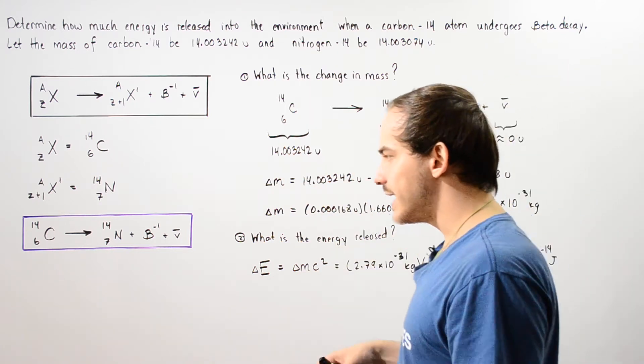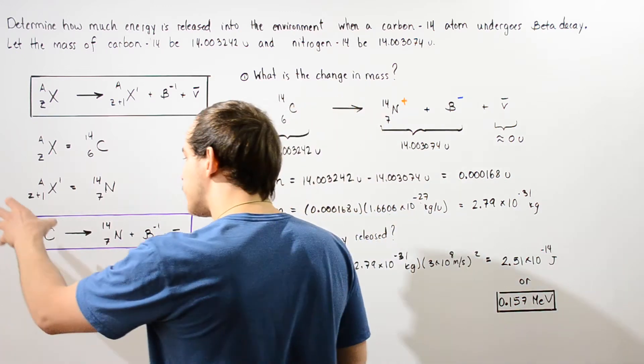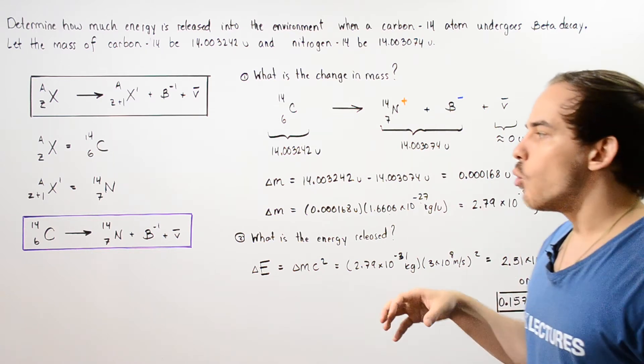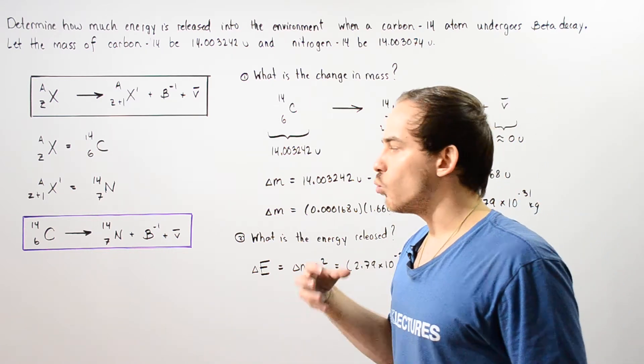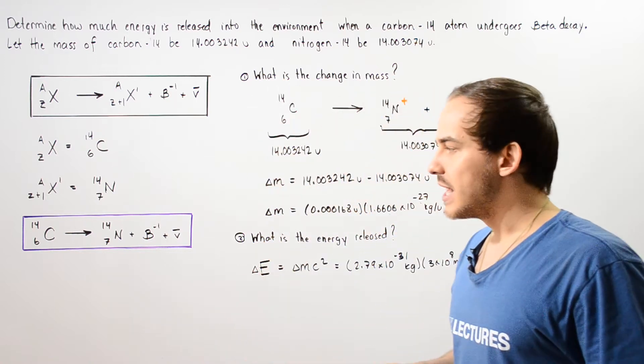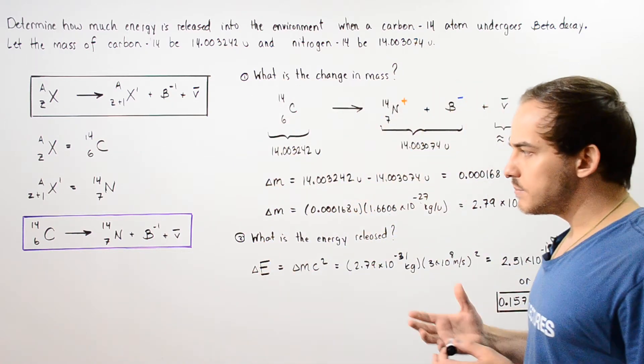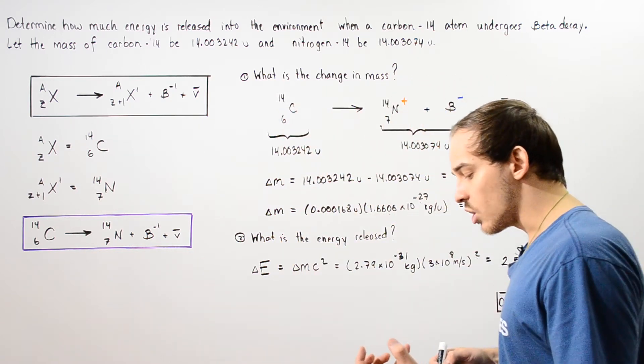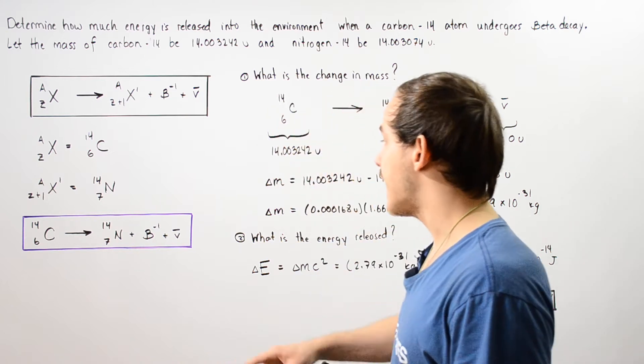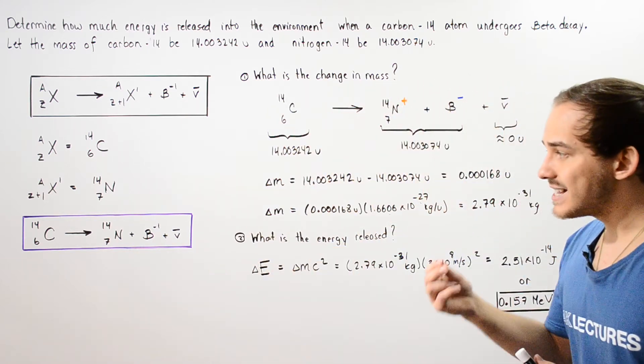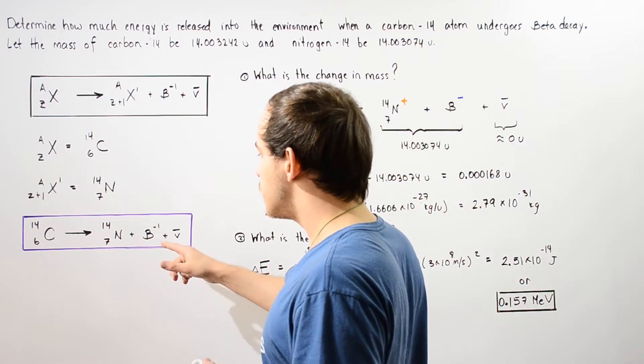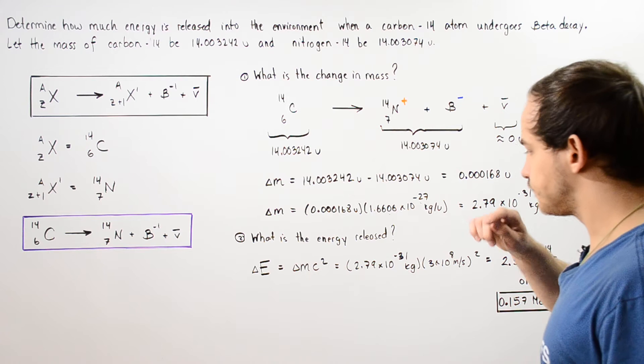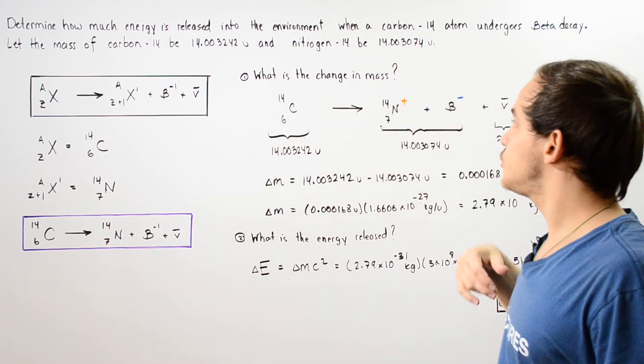To calculate how much energy is released when we go from the reactant side to the product side, let us actually calculate what the change in mass is. We're going to make the assumption that the neutrino or the anti-neutrino has a mass that is zero and that assumption makes sense because in fact our anti-neutrino has a very tiny mass much smaller than the mass of the electron or the mass of our proton or neutron.